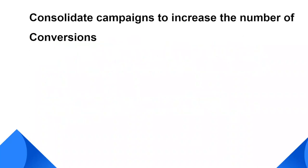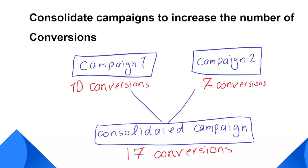For some businesses, your campaign might not get 15 conversions in the past 30 days. In that case, you might want to consolidate your similar campaigns to increase the number of conversions. For example, if you have two separate campaigns where one gets 10 leads every month and the other gets 7 leads a month, and the keywords in both campaigns have a similar theme and objectives, you can consolidate them into one campaign. That way, target ROAS might work better because of the consolidated data.